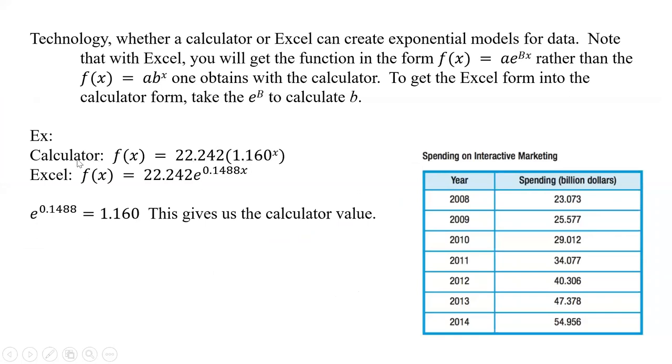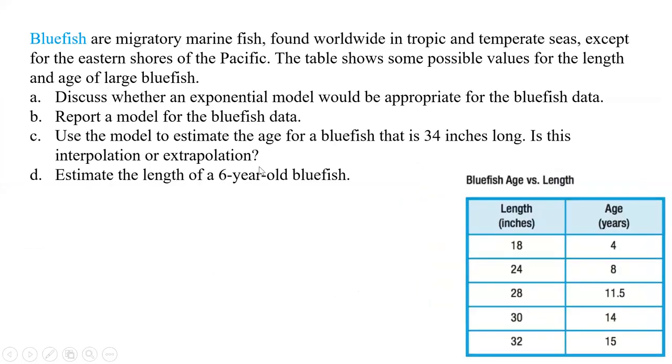Okay. So calculator should give you this. Excel will give you this. They're both correct answers. But if you want it in the form f(x) = ab^x, then you have to take that e to the 0.1488 to get that b value. And so that's the key difference between using Excel and using the calculator.